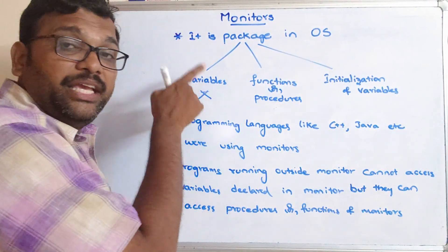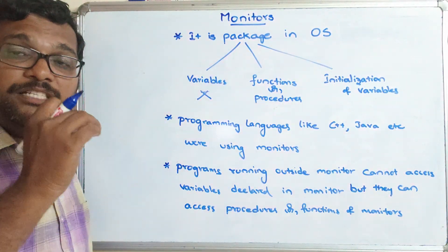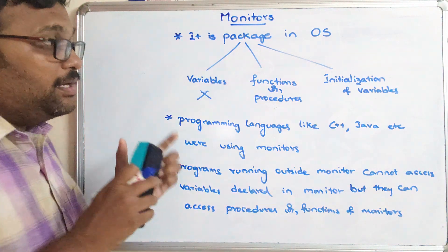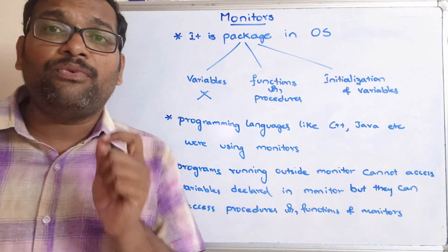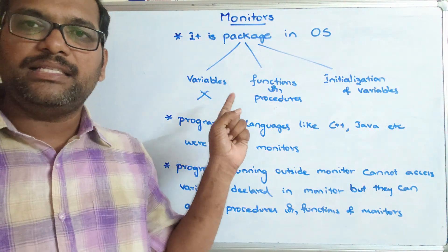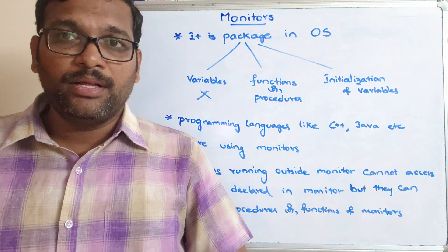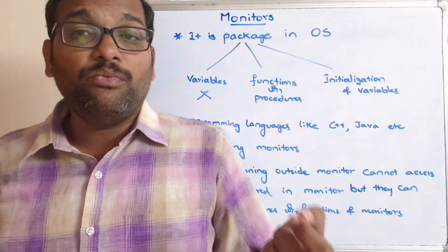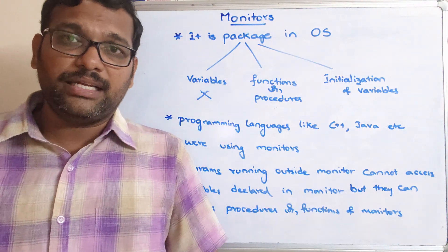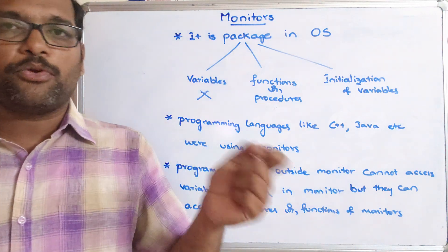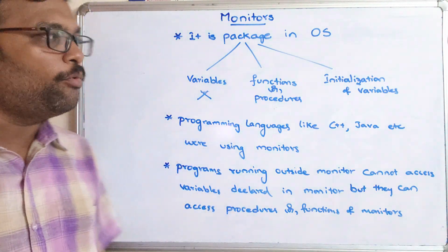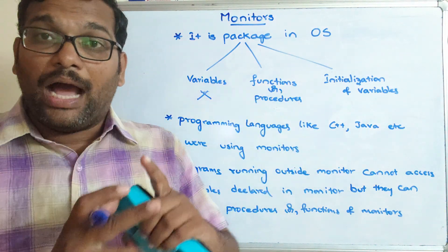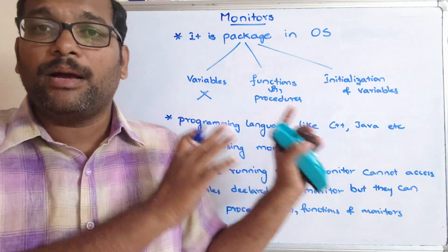These variables will be initialized inside the monitor itself. Similar to semaphores, only one program can be executed in the monitor at a time. In semaphores, we use the term critical section — one process enters the critical section and no other process is allowed in until it completes. Similarly, in monitors, at a time only one program can be executed, and other programs have to wait.